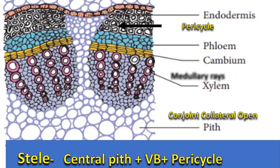In case of dicot plants, the vascular bundle shows phloem on the outer side and xylem on the inner side, which are separated by cambium. Such a vascular bundle is called conjoint, collateral, and open.